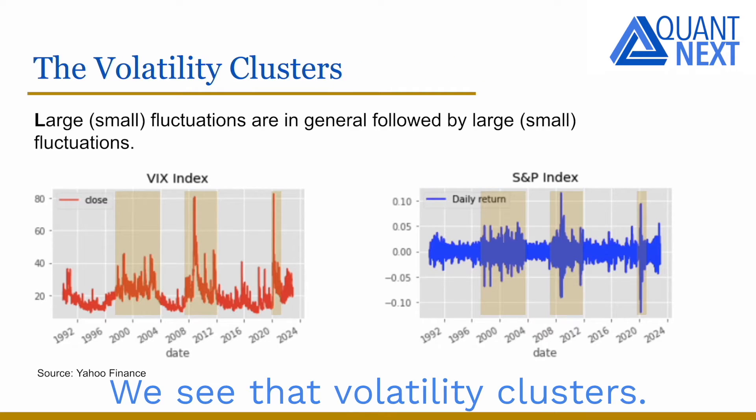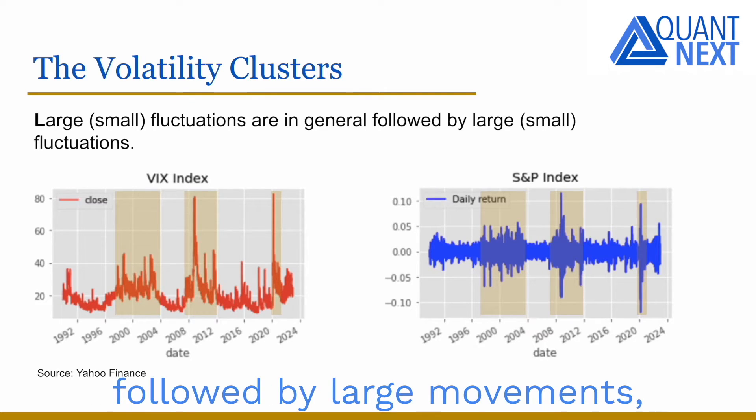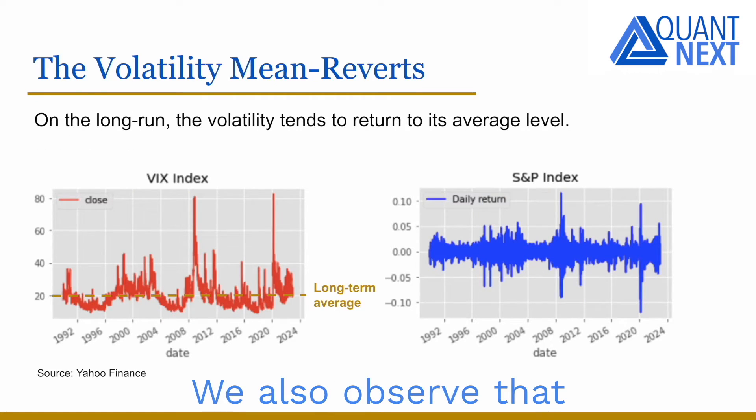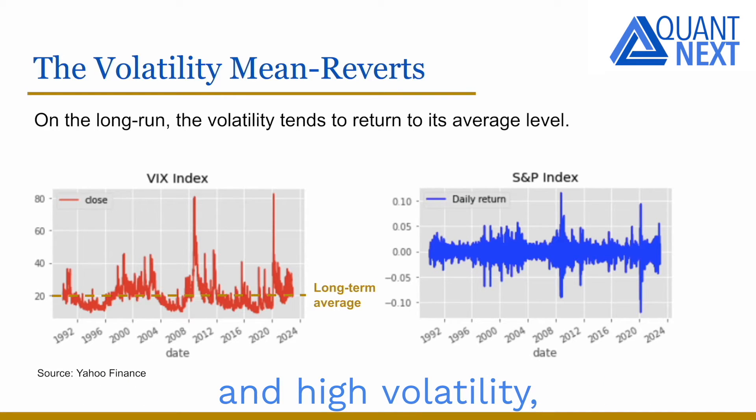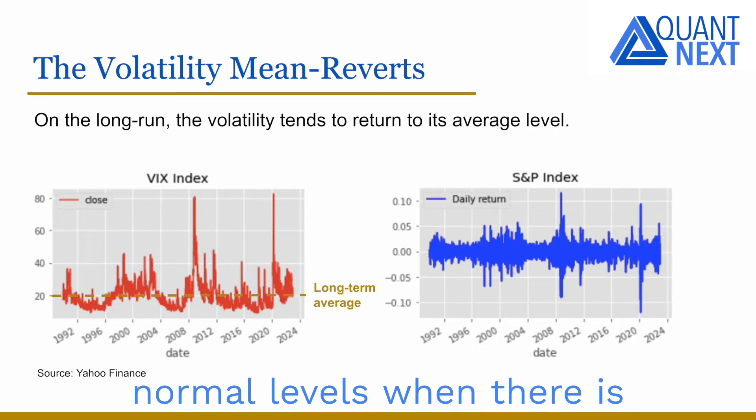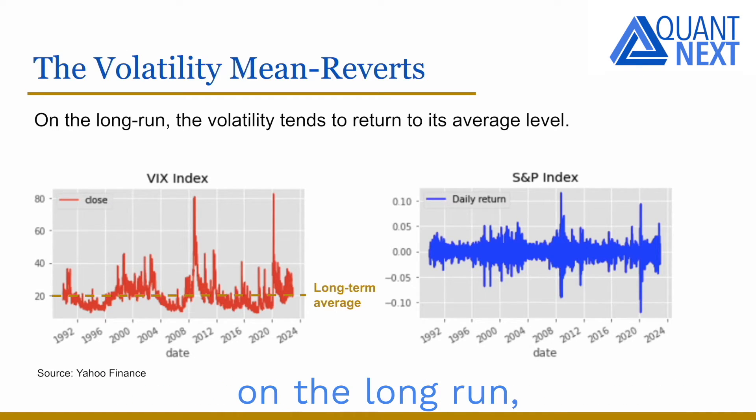We see that volatility clusters. Large movements are in general followed by large movements, while small movements tend to be followed by small movements. We also observe that after periods of large fluctuations and high volatility, the volatility tends to go back to normal levels when there is an improvement of the situation. So we observe that the volatility tends to mean revert to its average level on the long run. The long-term average is typically close to 20 for the VIX index.